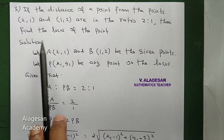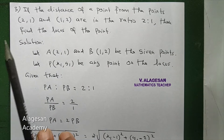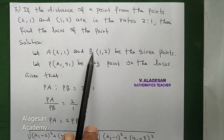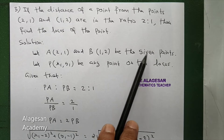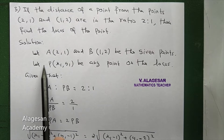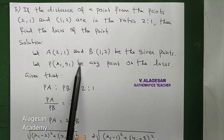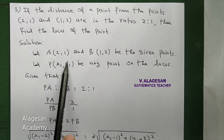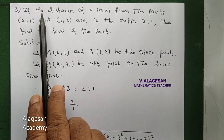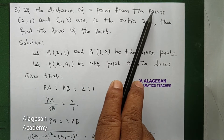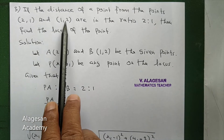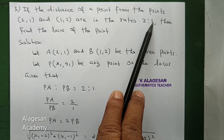First, let A=(2,1) and B=(1,2) be the given points. Let P=(x1,y1) be any point on the locus. The distance of the point from points A and B are in the ratio 2:1.